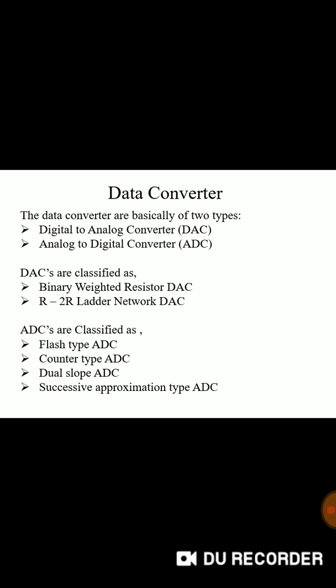Now about data converters. The data converters are of two types DAC and ADC. DAC are classified as binary weighted register DAC R2R ladder network and ADCs have types of flash type, counter type, dual slope and successive approximation.